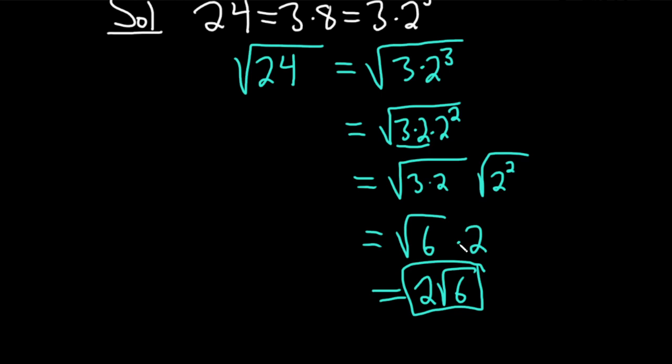Went through that kind of quickly. But again, you first write it as a product of primes. And then you want to extract the squared piece. So I wrote it like this. Note that if you multiply these 2 to the 1 times 2 squared, you add the exponents.